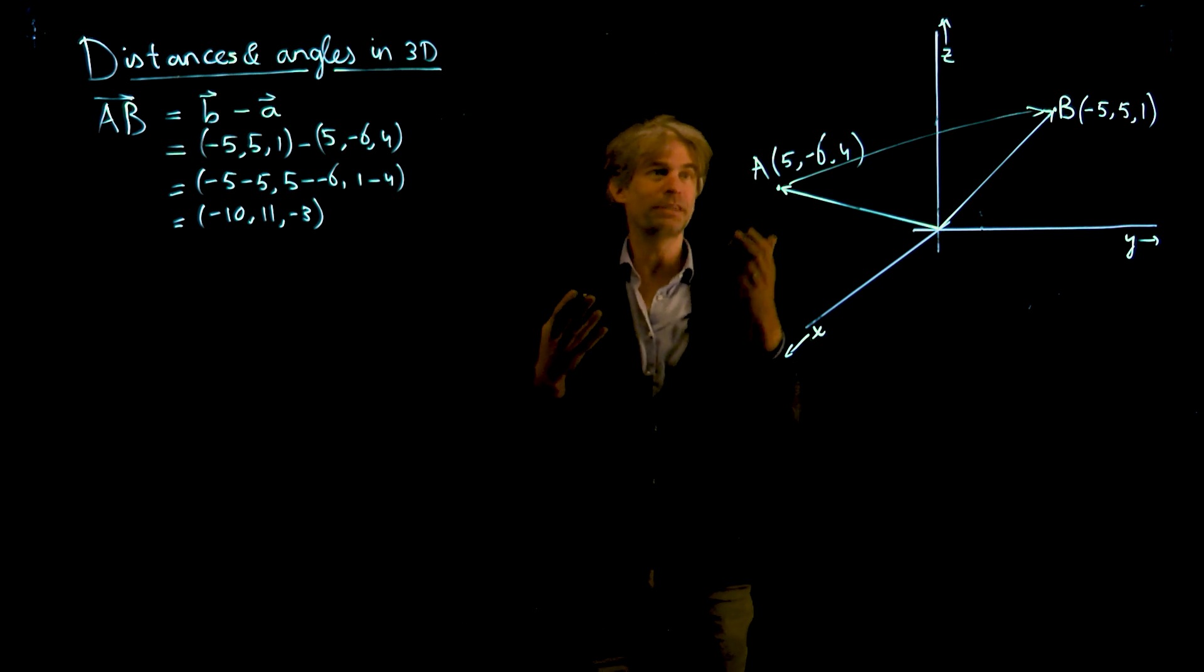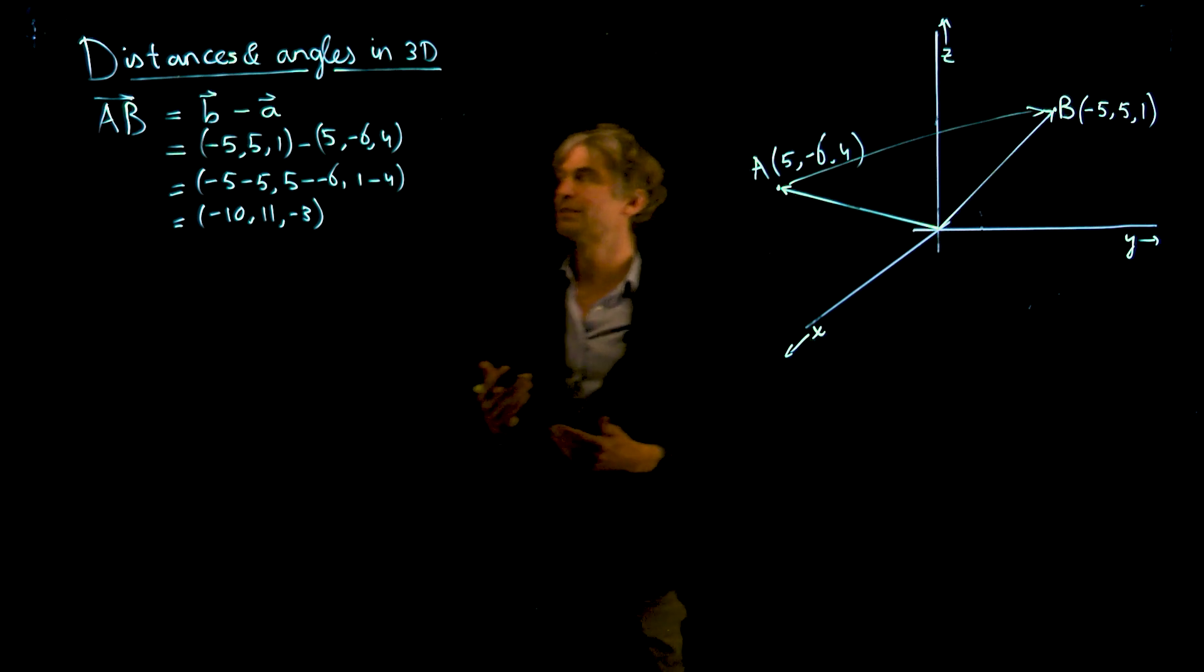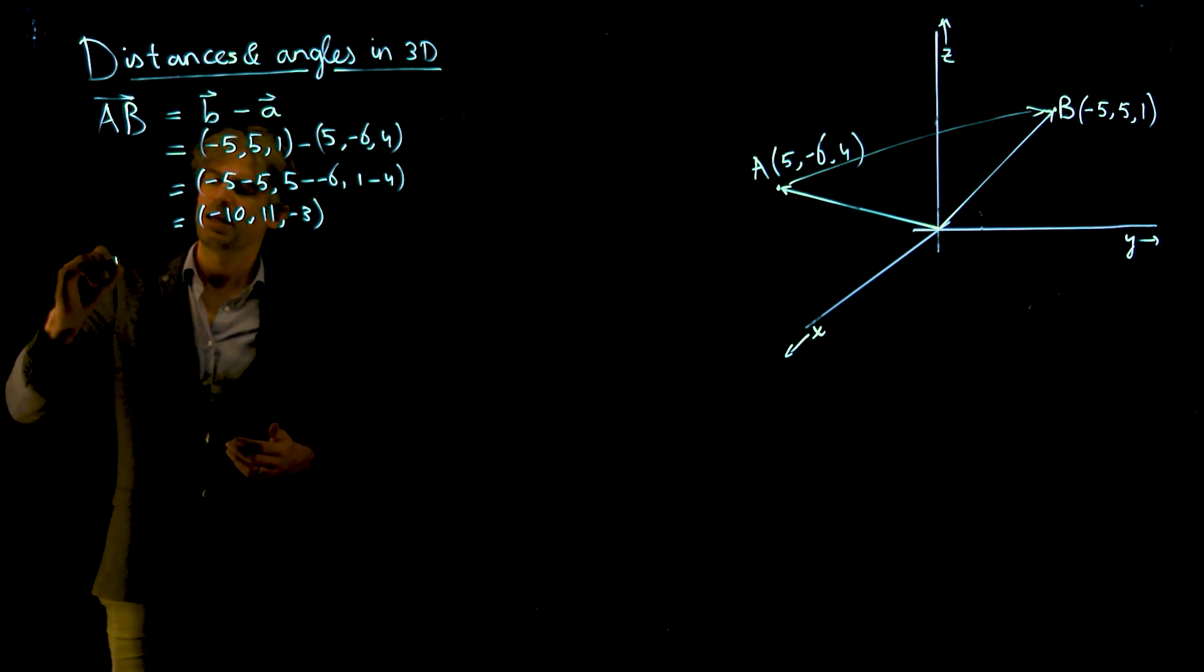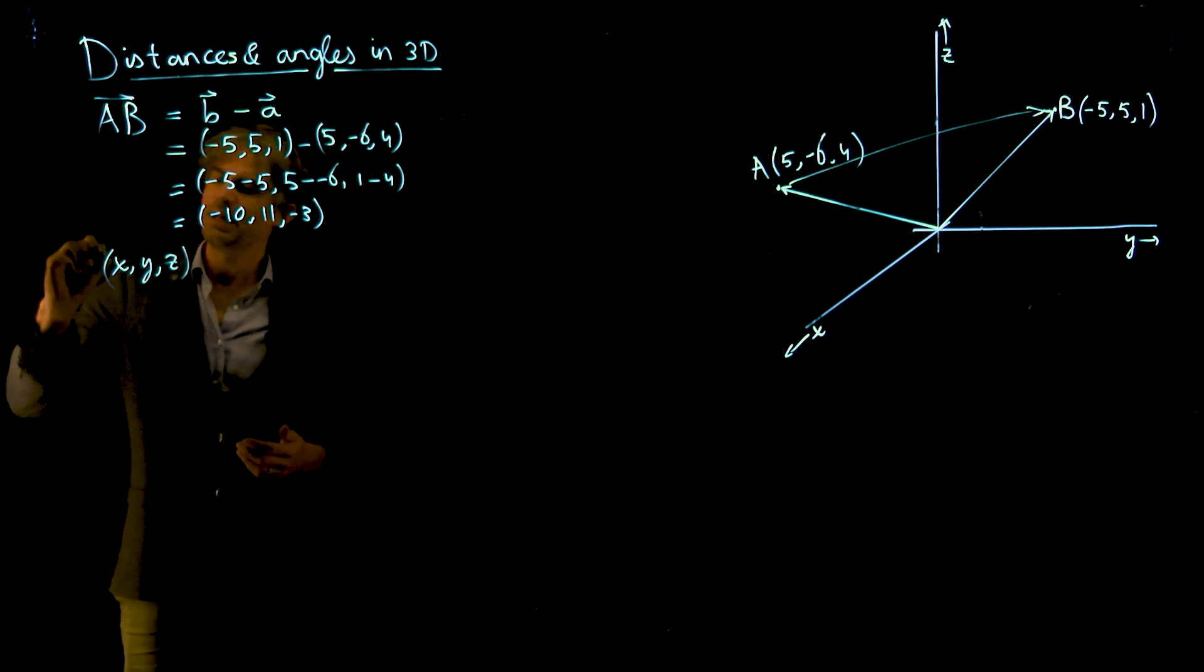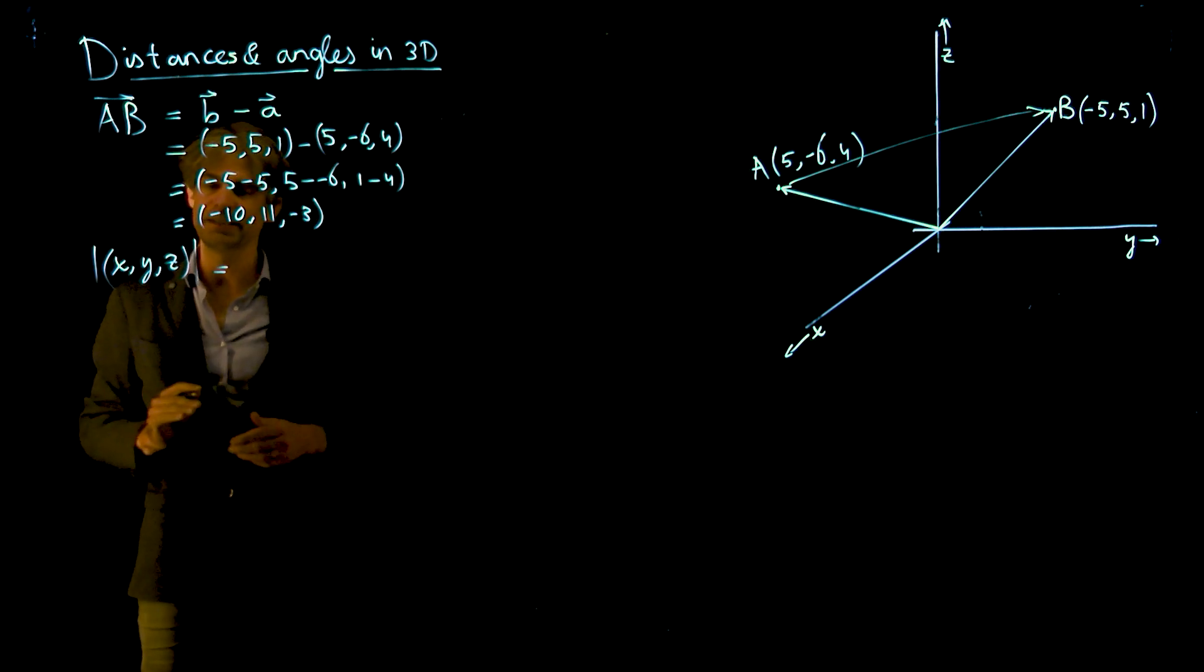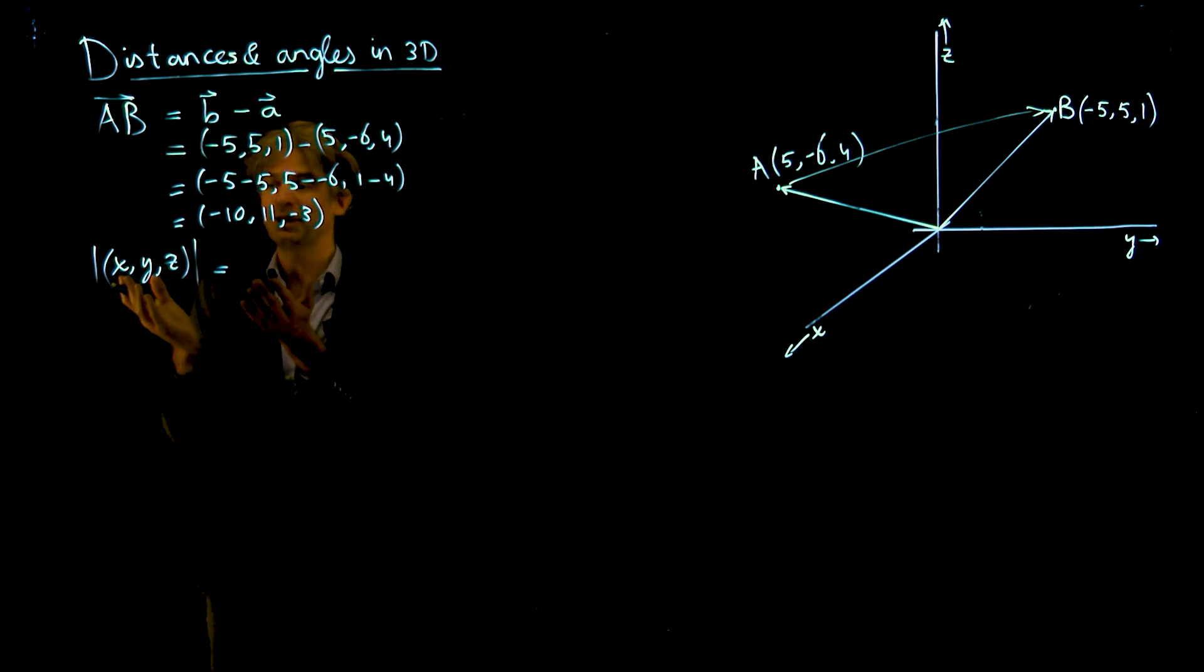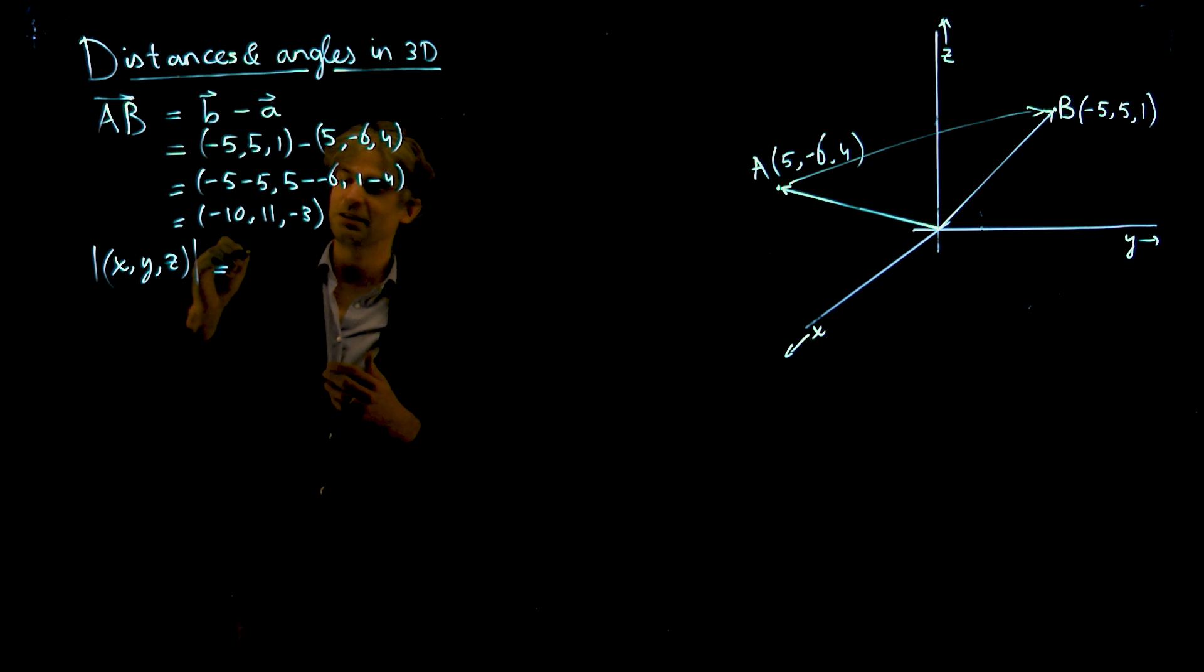Now the distance between A and B is actually the length of this vector. How do you compute the length of a vector? Suppose I have a vector x, y, z in general. The length is denoted by vertical lines around it, just like absolute value signs, except it's the length. How do you compute it? It's the generalization of Pythagorean theorem: the square root of the squares of all those coordinates.